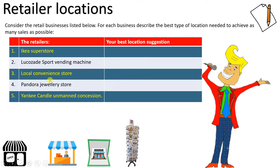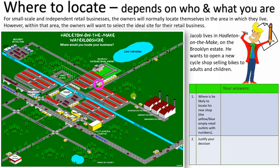Third, a local convenience store: think about why it's there and how it serves the community — that's the key question for describing its location choice. Fourth, the Pandora jewelry store — the one in town: think about why it's on that particular part of the town centre. Fifth, a Yankee Candle unmanned concession — those concessions with no staff: think about why those products are sold there. Write your descriptions in the right-hand column of the table.